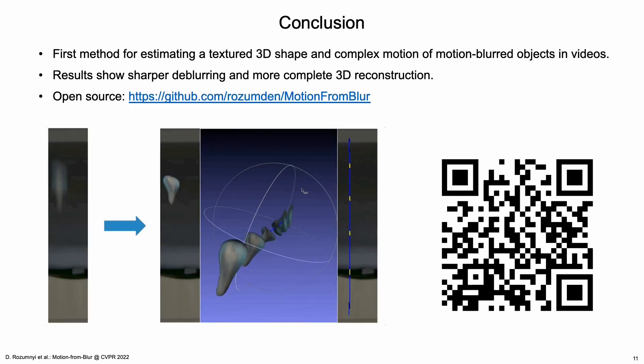To conclude, we proposed the first method for estimating a textured 3D shape and complex motion of motion blurred objects in videos. Results show sharper deblurring and more complete 3D reconstruction. The method is open-sourced on GitHub.